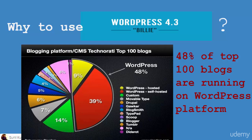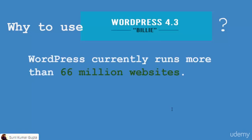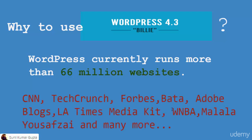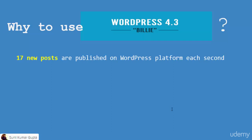WordPress is very popular, very powerful, and free. A few more facts: currently 66 million websites are running on WordPress — that's a rough estimate, the actual number is much more. Some popular websites include CNN, TechCrunch, Forbes, Adobe blogs, LA Times, MediaKit, W, NBA, Malala.org, and many more. All top tech companies are using WordPress for their websites and blogs.